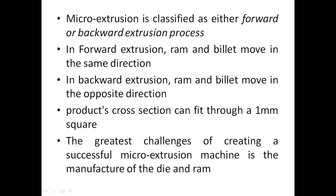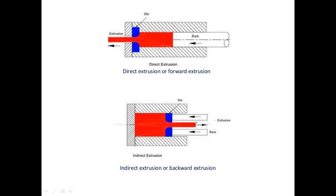The greatest challenge of creating a successful micro extrusion machine is the manufacture of the die and ram. In forward extrusion, metal is forced to flow in the same direction as the ram being used to apply pressure. Backward extrusion is the opposite, where metal is forced to flow in the opposite direction to the ram.